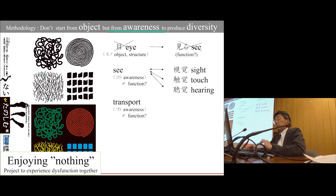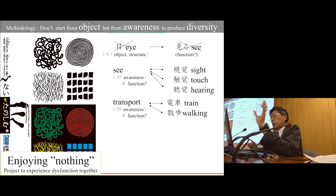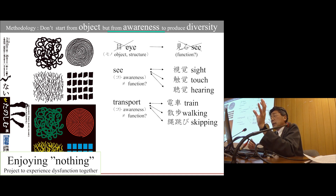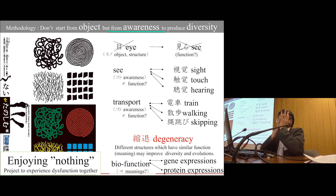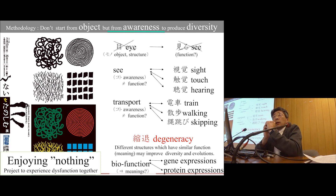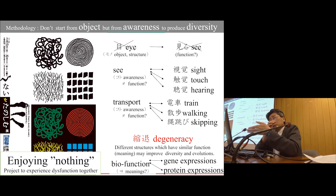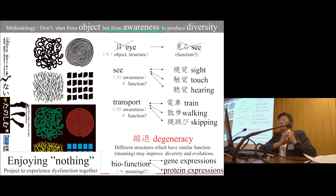As an example: transport is not a function, but an awareness. If it's an awareness, then we can use a train, we can walk, and then skip. This is called degeneracy in the biological field. The definition is: a different structure, similar meaning — similar meaning may improve the diversity of evolution. There are many researchers on this.